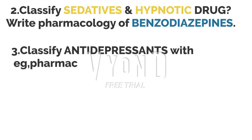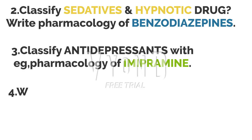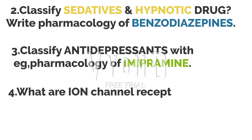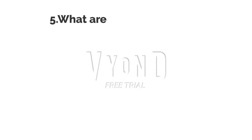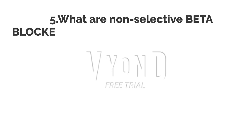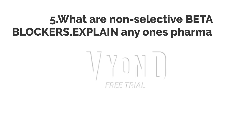The third question is: classify antidepressants and write the pharmacology of imipramine. The fourth question: what are ion channel receptors? Explain the transduction mechanism. The fifth question: what are non-selective beta blockers — also called adrenergic blockers? You have to write the pharmacology of any one.